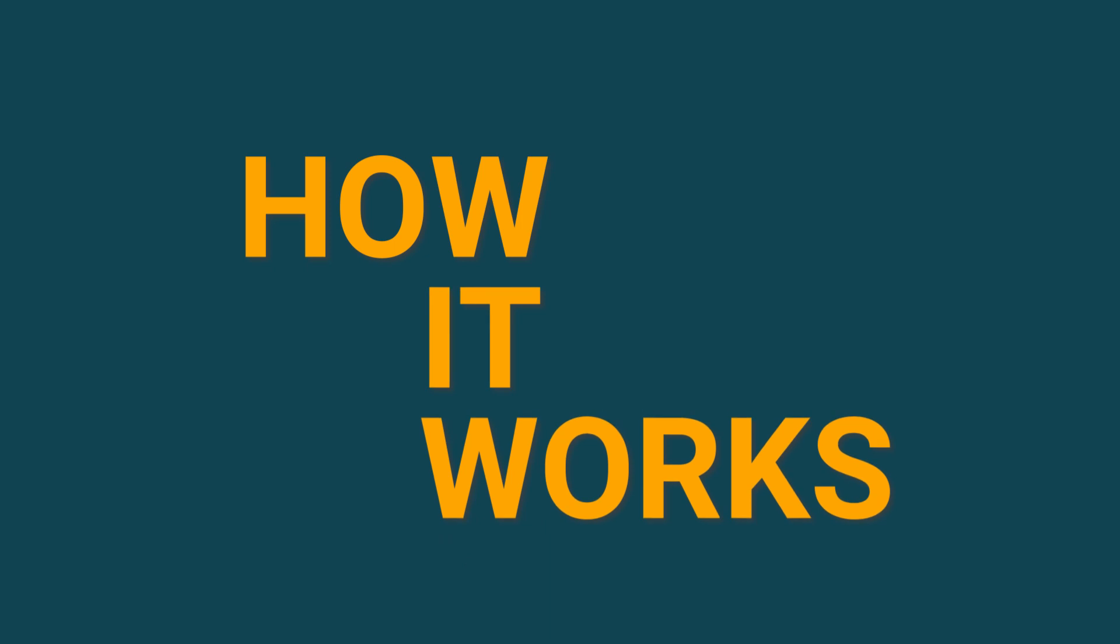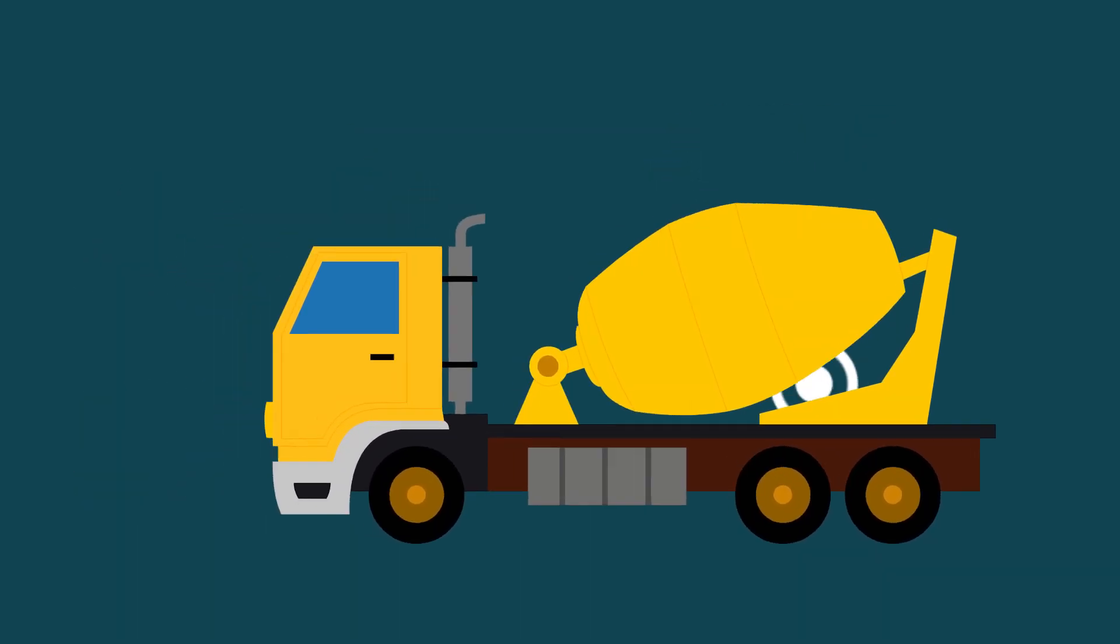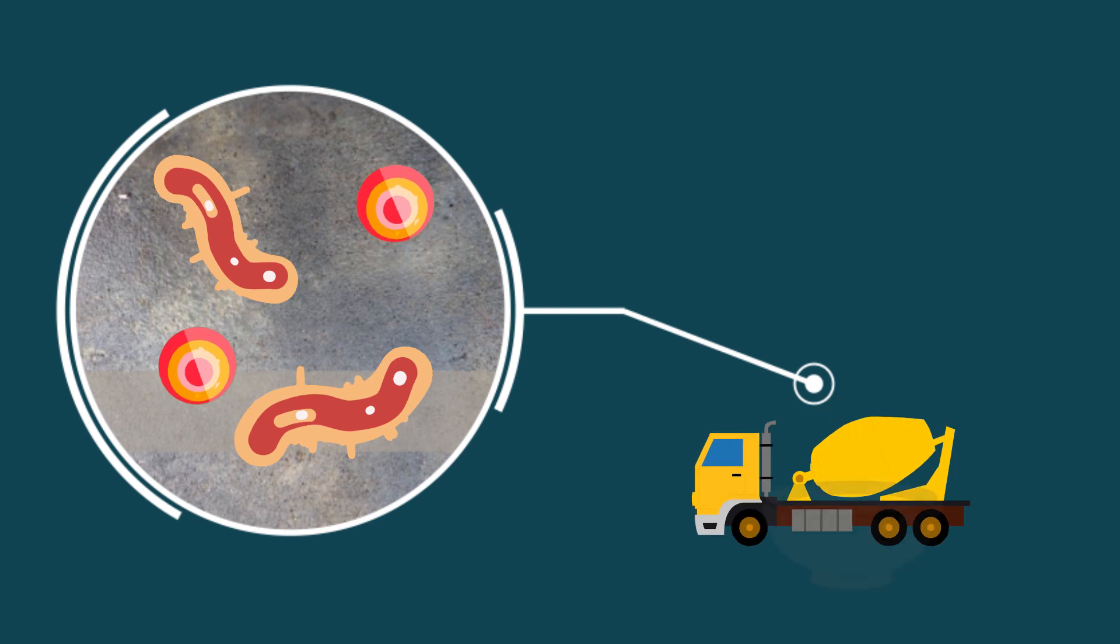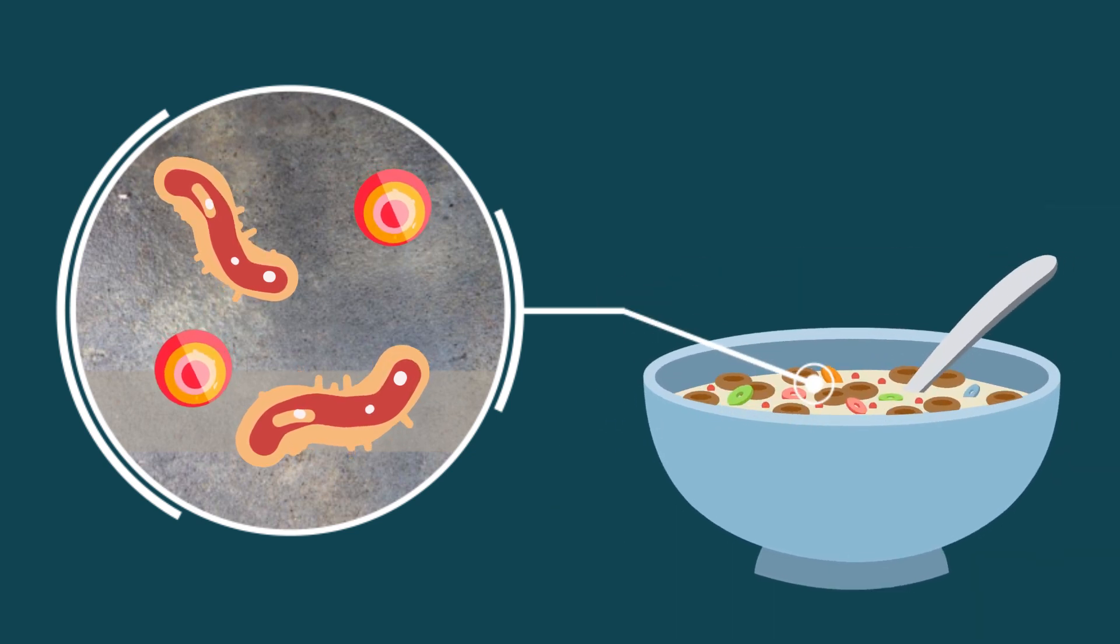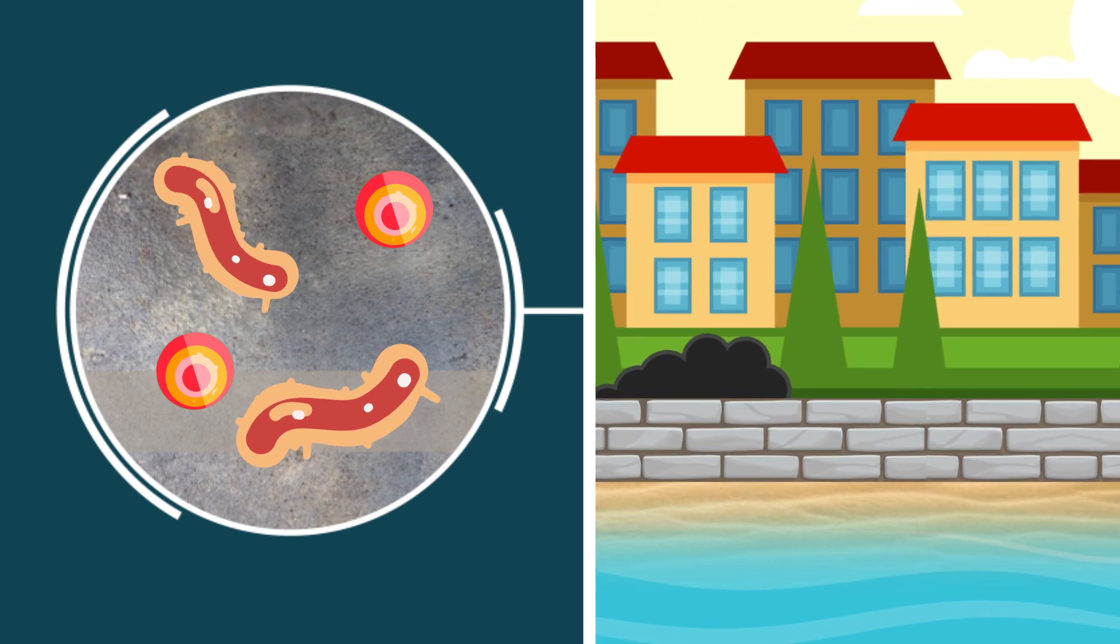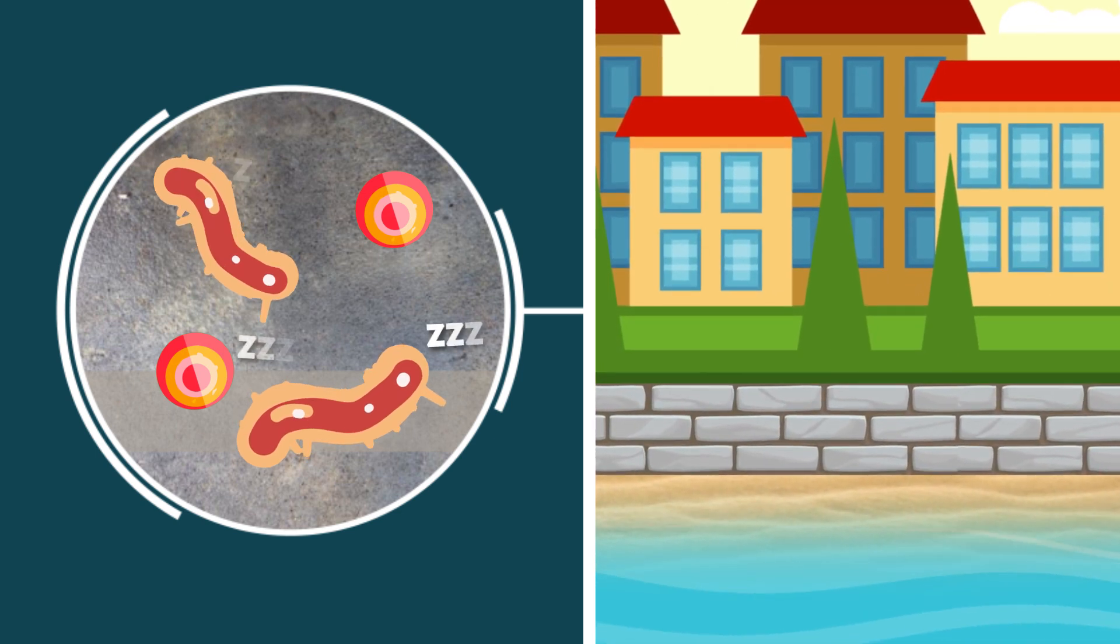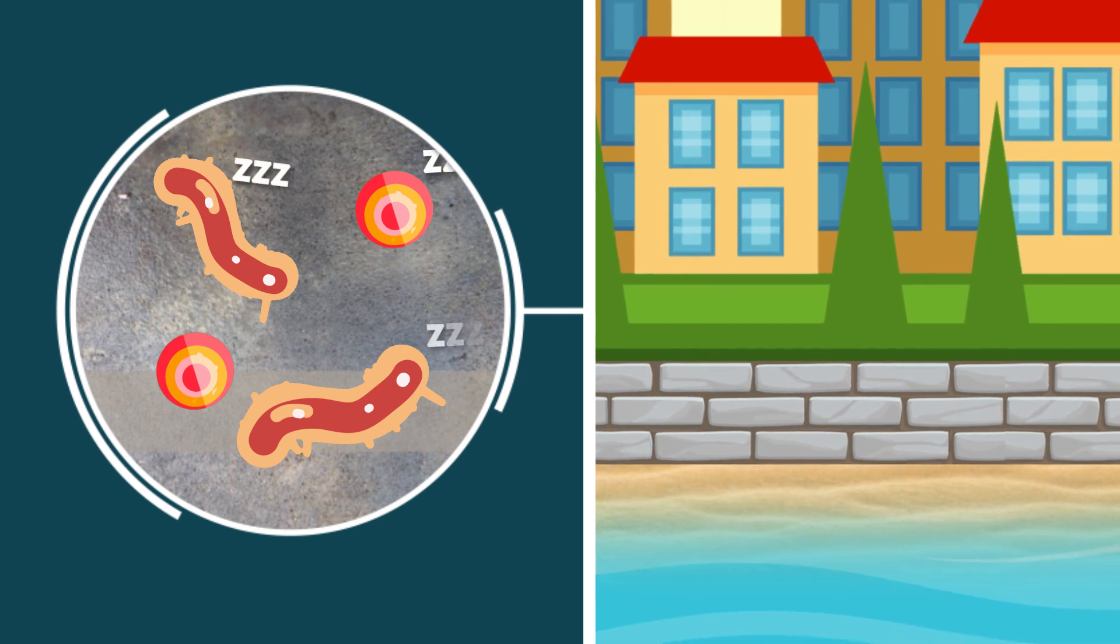Here's how it works. When mixing the concrete, we add a mix full of bacteria and spores. Think of it like a nutrient soup for calcium-producing microbes. As the concrete hardens, the microbes in the soup fall asleep. They lie dormant in the concrete until they're needed.